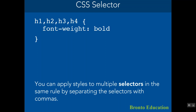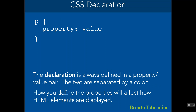You can apply styles to multiple selectors in the same rule by separating the selectors with commas. For example, h1, h2, h3, and h4 are all headings — I can change their font-weight to bold using one set of curly brackets with multiple selectors separated by commas.